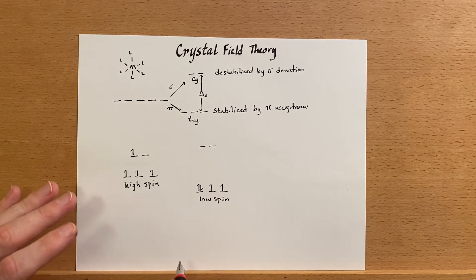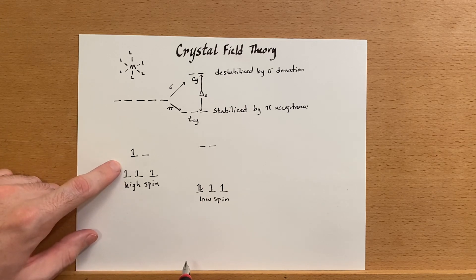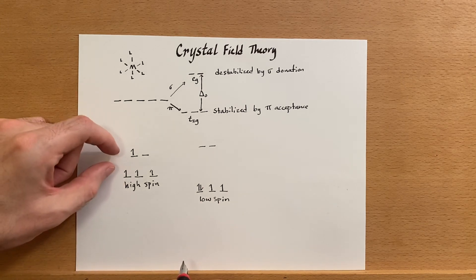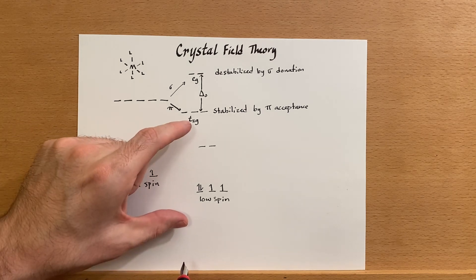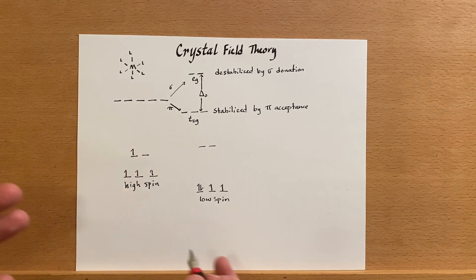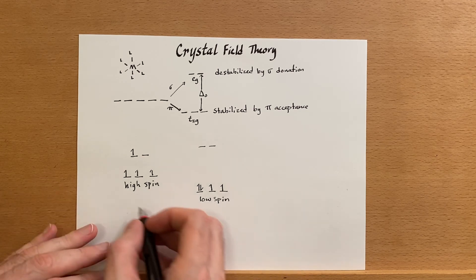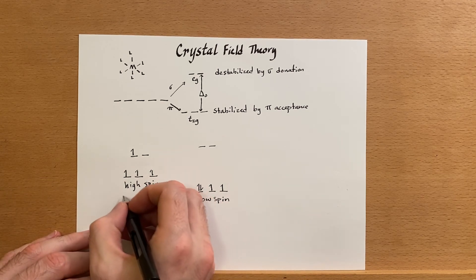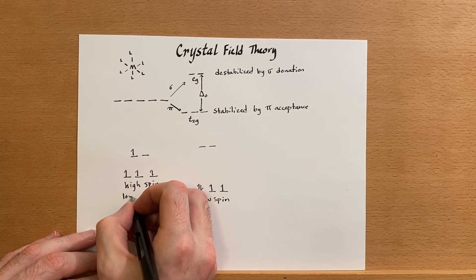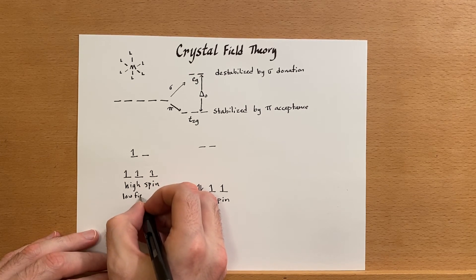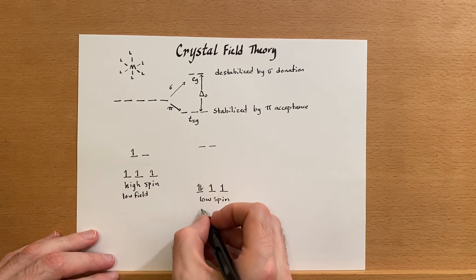You'll also hear these called low field - in other words, low splitting - and high field or higher splitting. Try not to get too confused about that. So low field and this is high field.